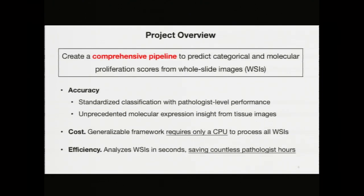Deep learning is a recently developed machine learning technique involving the creation and application of image-oriented neural networks called convolutional neural networks. They essentially use a large-scale image database to make predictions regarding the implications of certain aspects of those images. In this project, I used a large database of histology images to make predictions regarding the severity of breast cancer. The goal of my project was to create a comprehensive pipeline to predict the categorical and molecular proliferation scores from whole slide images, which can range up to 10 gigabytes in size, and to solve the problems of accuracy, cost, and efficiency that plague current medical practice.